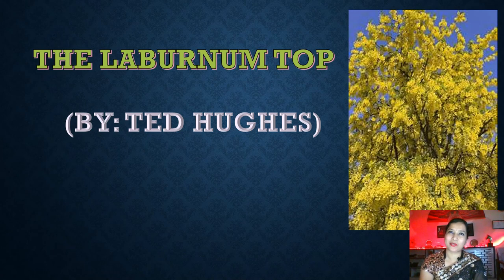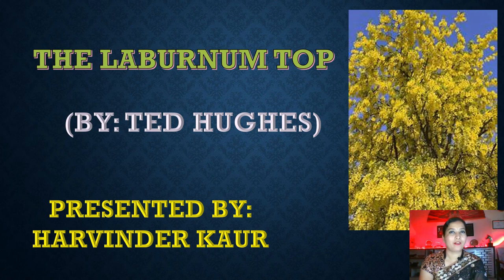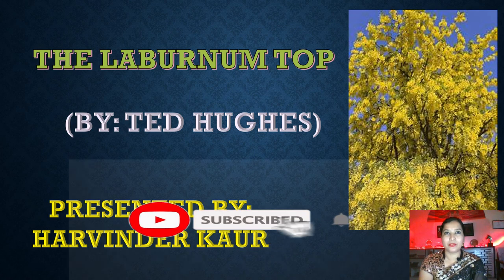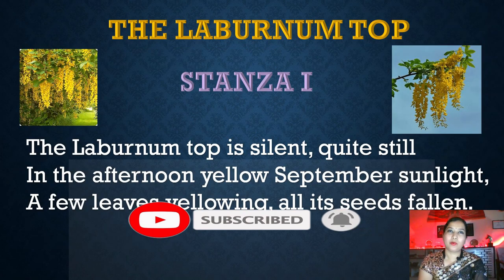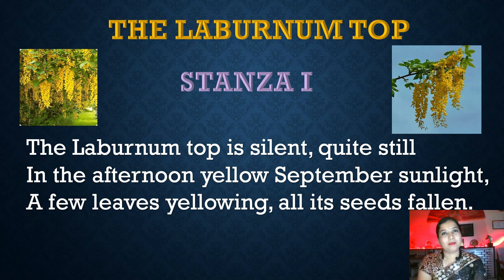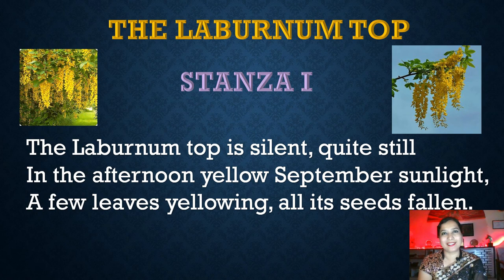Hello viewers, welcome to my channel Harinder Kaur. Today I have taken up the poem 'The Laburnum Top' from the book Hornbill of class 11. This is a very short and sweet poem. The Laburnum Top is written by Ted Hughes — pronounced 'Hughes', H-U-E-S. In this poem the poet talks about the Laburnum tree. There is a bird also called the goldfinch. As you can see in the pictures in my slide, the tree's flowers are yellow and the prominent color of this tree is yellow.